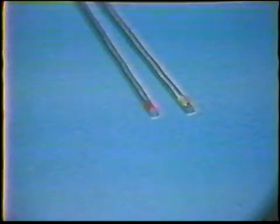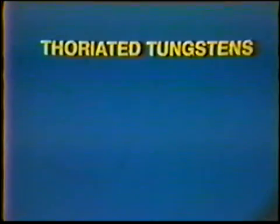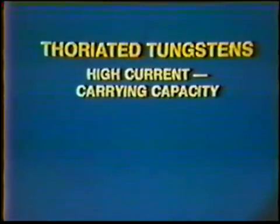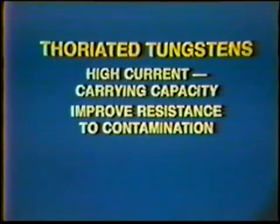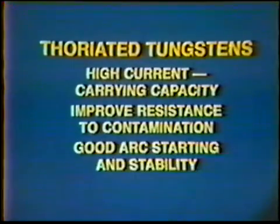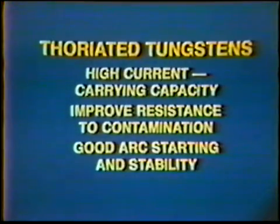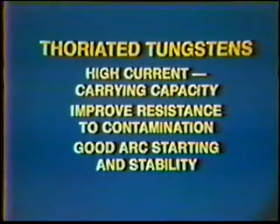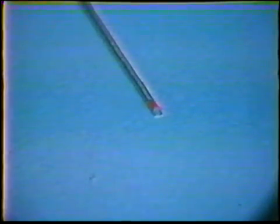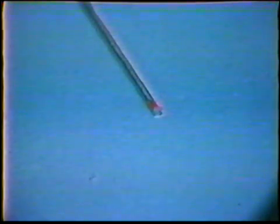1% and 2% thoriated tungstens are used with direct current. These tungstens are alloyed with a compound called thoria, which increases the current carrying capacity, provides longer life, and improves the resistance to contamination. Thoria also provides better arc-starting and stability. The 2% thoriated tungstens possess these qualities to a higher degree than the 1%.